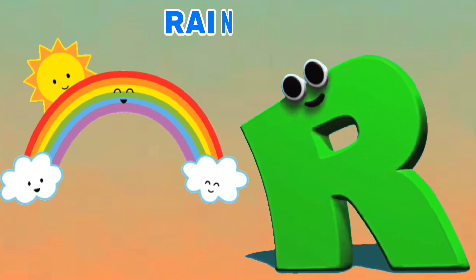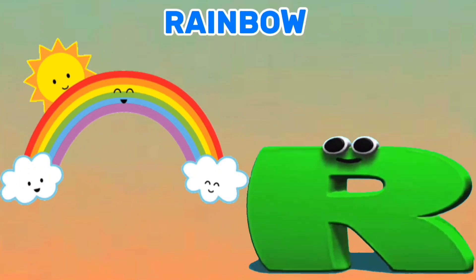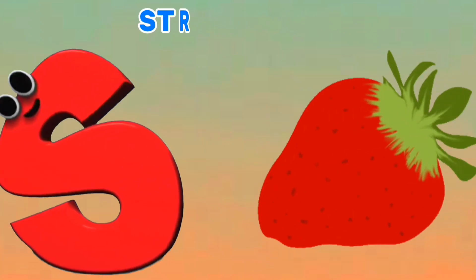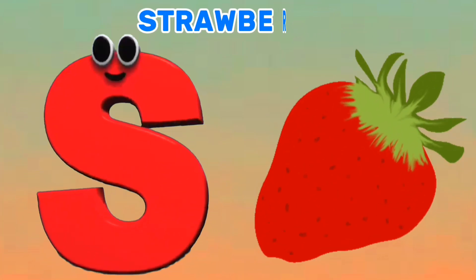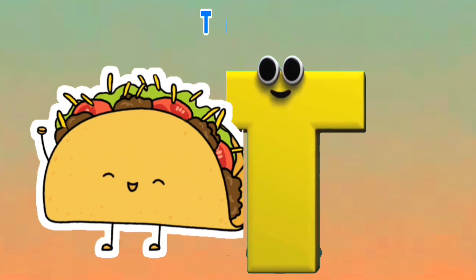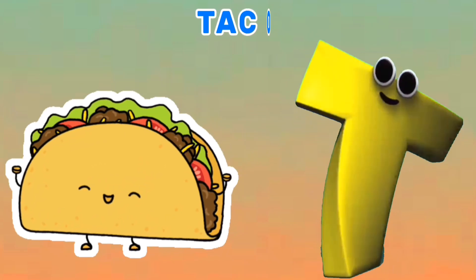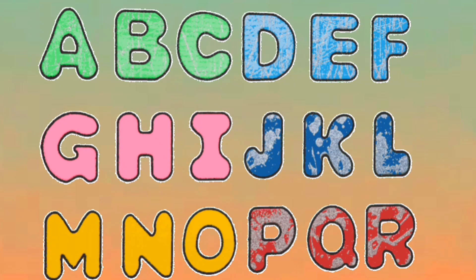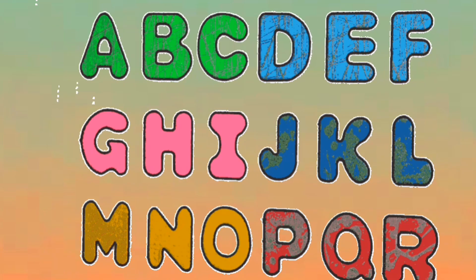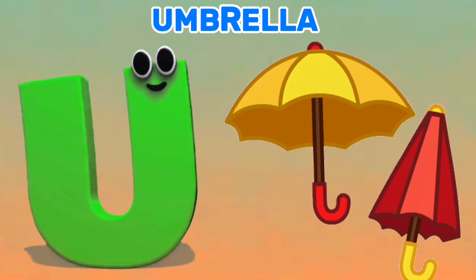R is for Rainbow. R, R. S is for Strawberry. S, S. T is for Taco. T, T. It's the letters of the alphabet — sing!